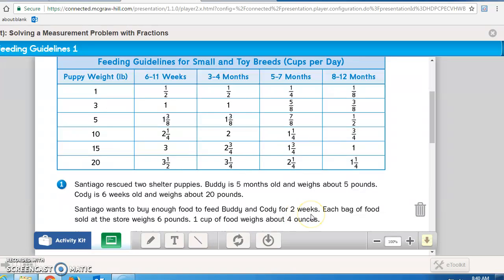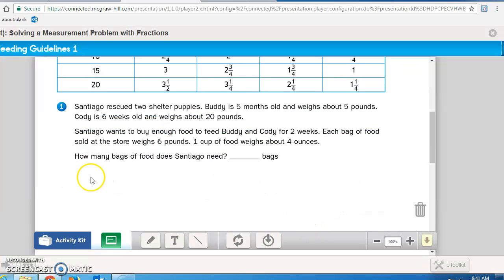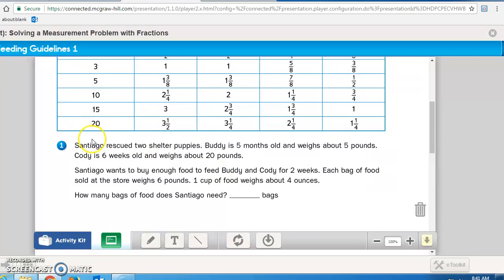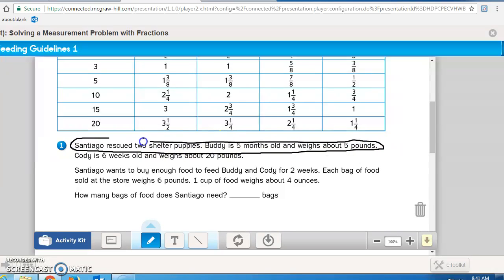So how many days is that? Because this is cups per day. Each bag of food sold at the store weighs 6 pounds. One cup of food weighs about 4 ounces. How many bags of food does Santiago need? What information do we need? Basically, it's telling us we're just looking at Buddy, so we don't even need this information. Now answer the question. When you finish the question, go check it in the answer key. If you got it wrong, bring it up to me and I will show you what you did incorrectly.